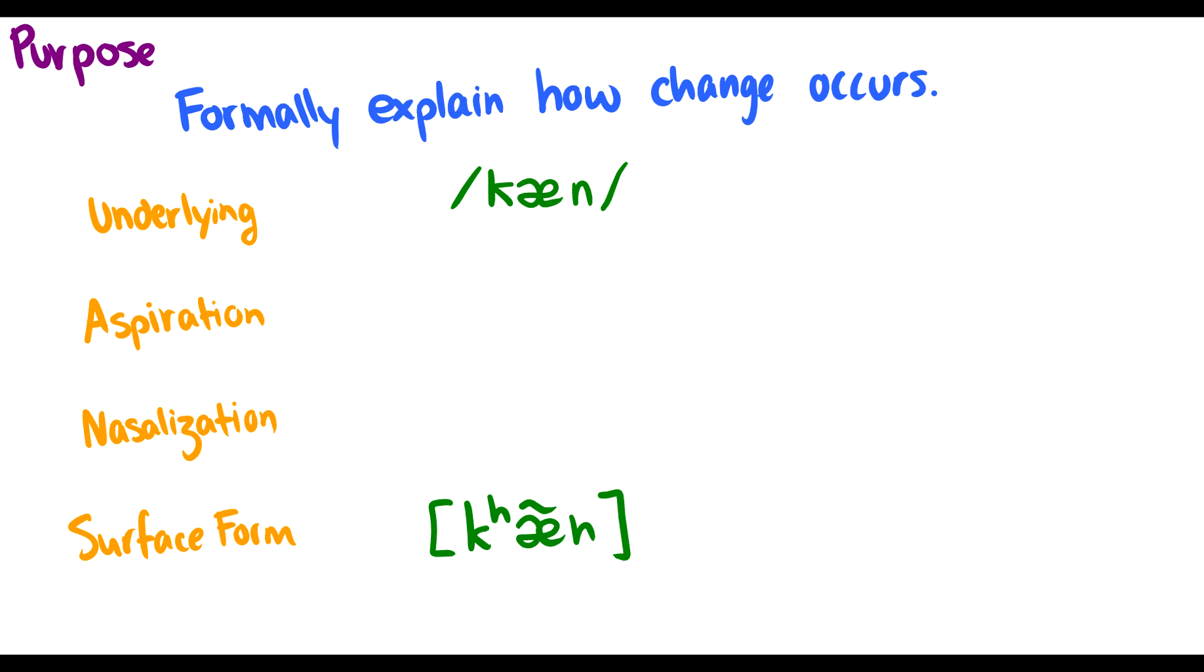We want to formally explain how these phonological changes occur. So for instance, we have these underlying phonemes in the word can, but we do some rules and then we get to this surface form where the K is aspirated, the E is a little bit nasalized, and that N looks like an H.